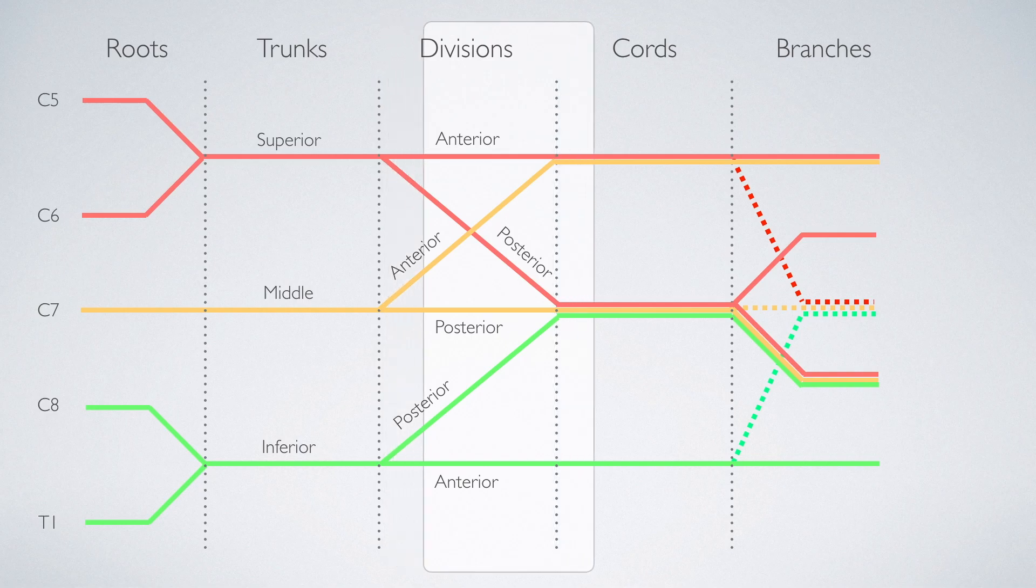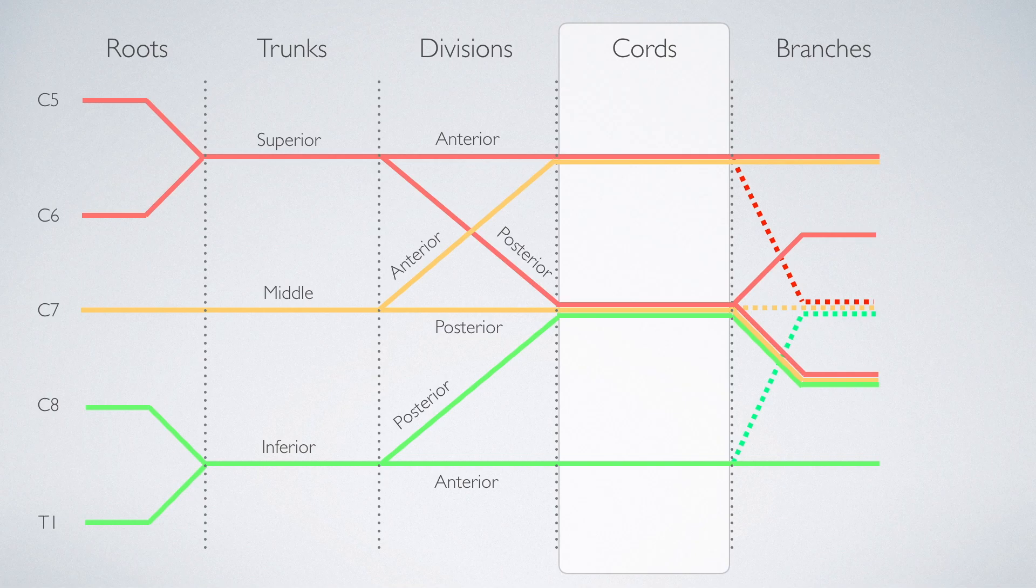Next, we have the cords, which are named based on their positional relationship to the axillary artery. The lateral cord is formed by the anterior branches of the superior and middle trunk. The posterior cord is formed by all the posterior branches, and the medial cord is formed by the anterior division of the inferior trunk.